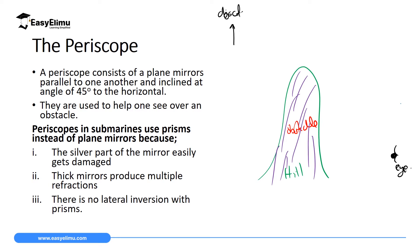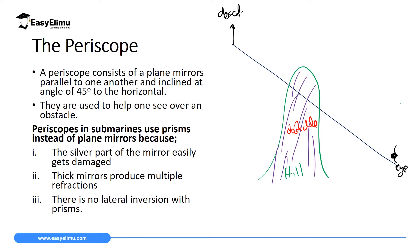For this person to see that object, light must travel from the object to the eye in a straight line. So if this obstacle or hill is not transparent, the rays cannot travel over it. We need another way to divert or control those rays to reach the eye of that person, and the instrument which can do that is a periscope.